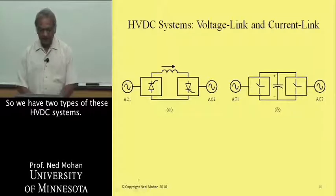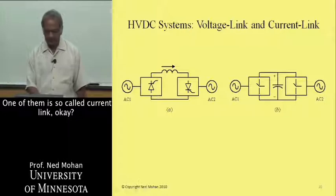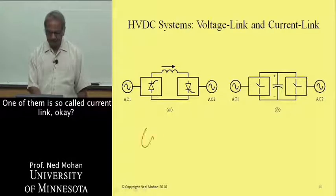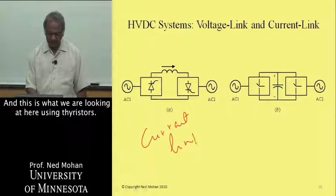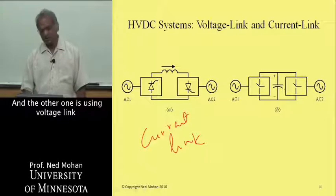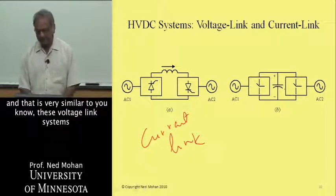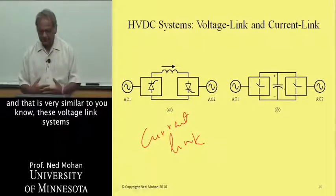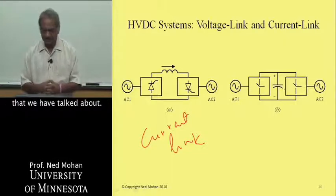We have two types of these HVDC systems. One of them is the so-called current link, and this is what we are looking at here, using thyristors. The other one is using the voltage link, and that is very similar to these voltage link systems that we have talked about.